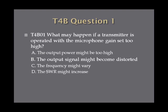Question 1. What may happen if a transmitter is operated with the microphone gain set too high? A. The output power might be too high. B. The output signal might become distorted. C. The frequency might vary. D. The standing wave ratio might increase.